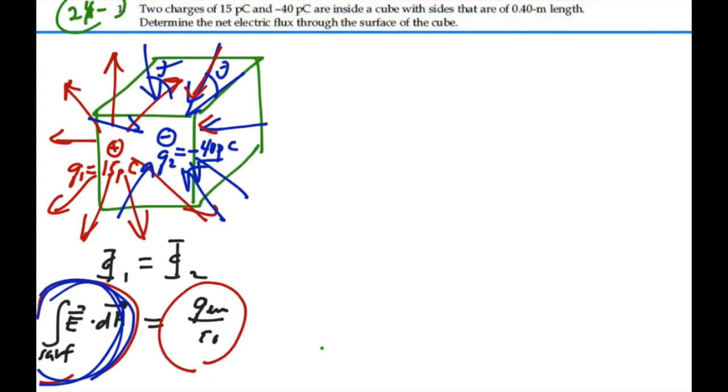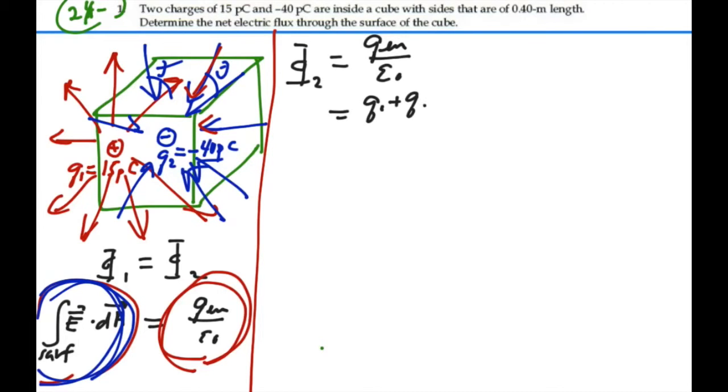But if we look at the right-hand side, charge enclosed by epsilon nought, well, that's pretty easy. So we can get our total flux from the right-hand side. We'll say that our flux, let's call it flux 2, is the total charge enclosed divided by epsilon nought. Well, that's going to be Q1 plus Q2 divided by epsilon nought.